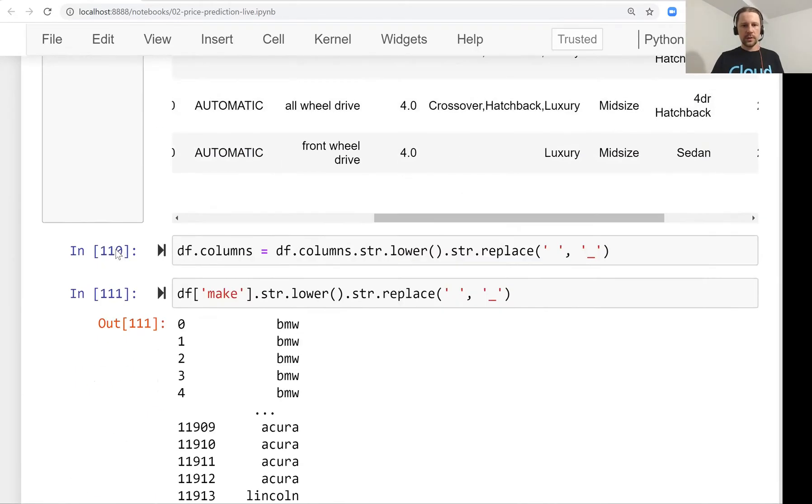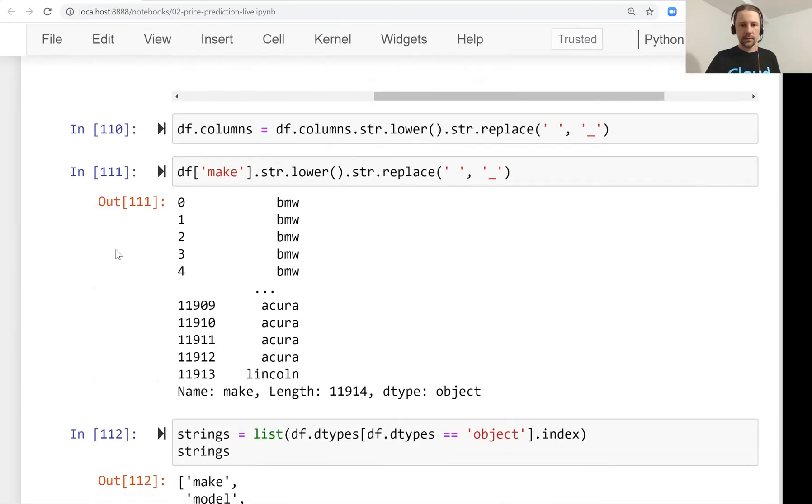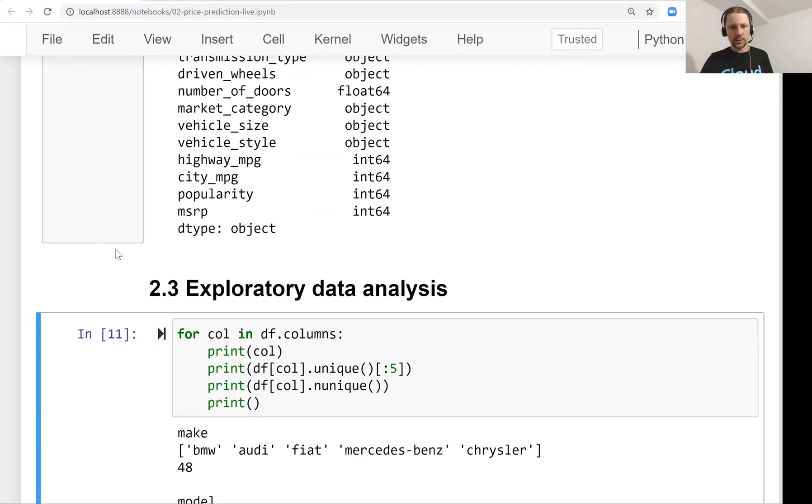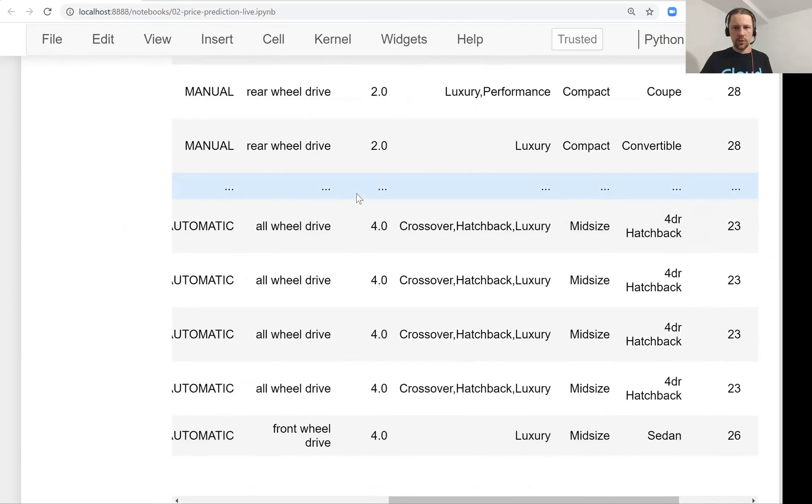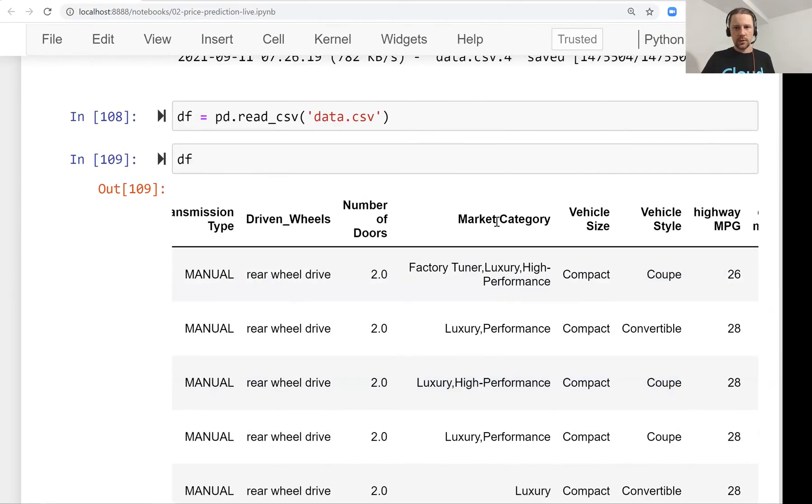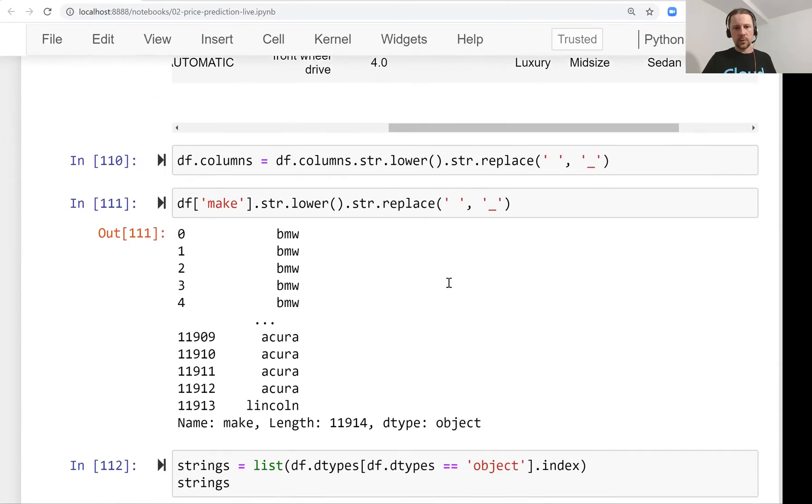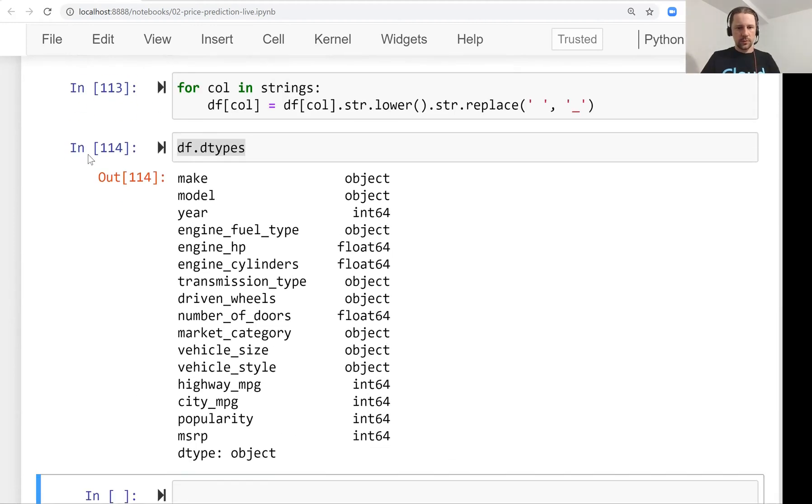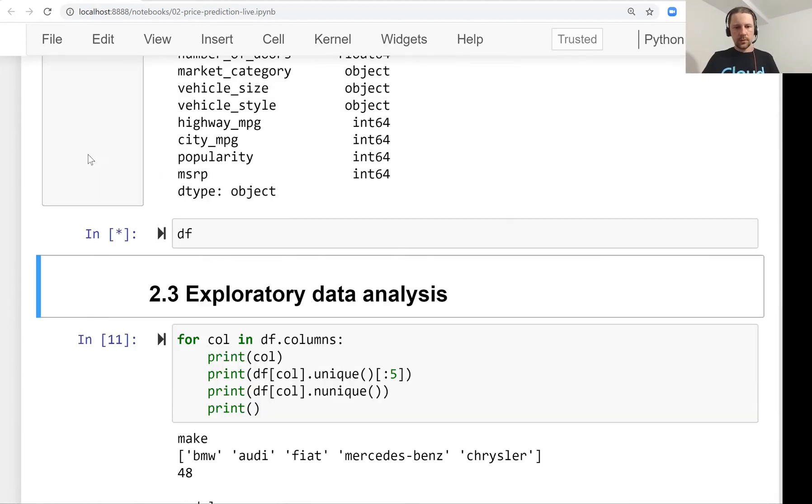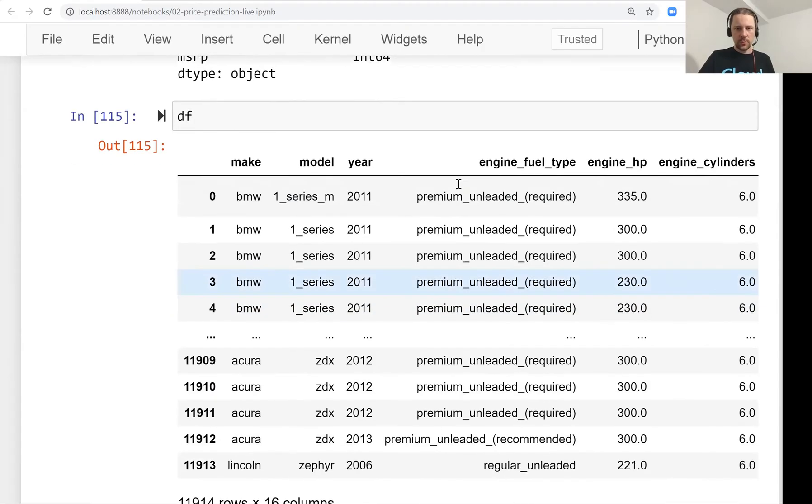First, what we did is we cleaned the dataset, we prepared it so it looks more uniform because here we have spaces, capital case, lowercase. We made it uniform so it looks cleaner.